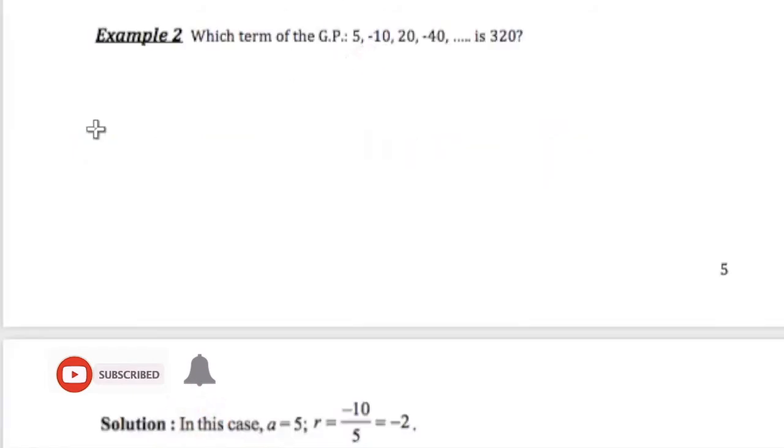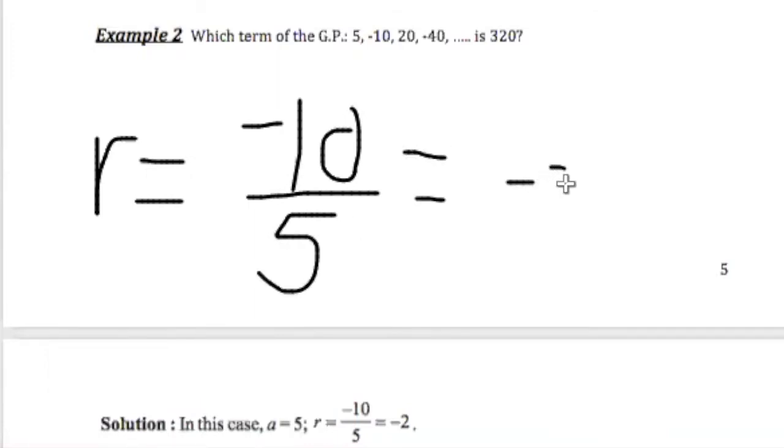Example 2. Which term of the GP 5, negative 10, 20, negative 40, is 320? First thing we need is what is A and what is R. A is always the first term. So the first term is 5. To find R, we see the second term divided by the first term. So that's why we arrive at negative 2. Or you could say 20 divided by negative 10, or negative 40 divided by 20. So R is negative 2 and A is 5.